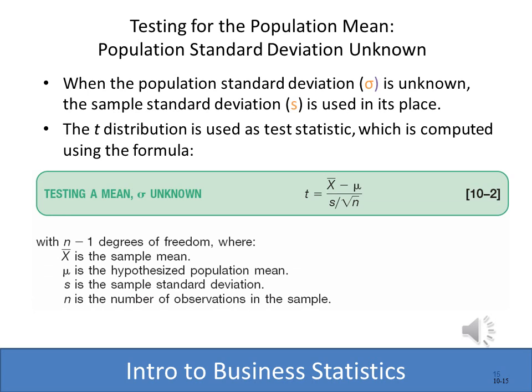When doing a one-sample test of hypothesis and we know the population standard deviation, we use the z. However, in many cases we won't know the population standard deviation, and in that case we use the t. The t uses the standard deviation of the sample. The formula for computing a t is exactly the same as the z, except we use s — the standard deviation of the sample — instead of sigma, the standard deviation of the population.